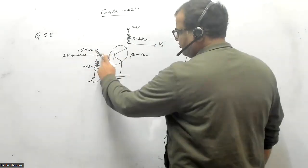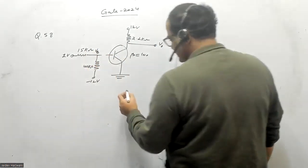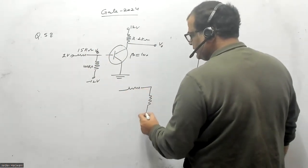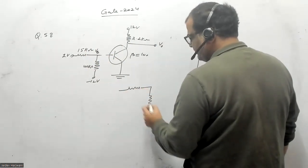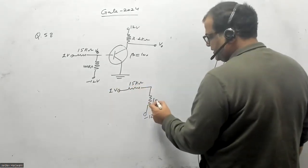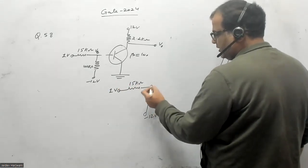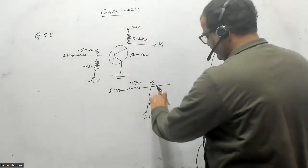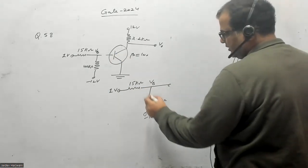If I try to find voltage VB here, this is my circuit. This is minus 12 volts given, this is 1 volt, this is 15 kilo ohm, and this is your 100 kilo ohm. Let us say this voltage is VB. I am making this as open circuit and if I try to find VB.